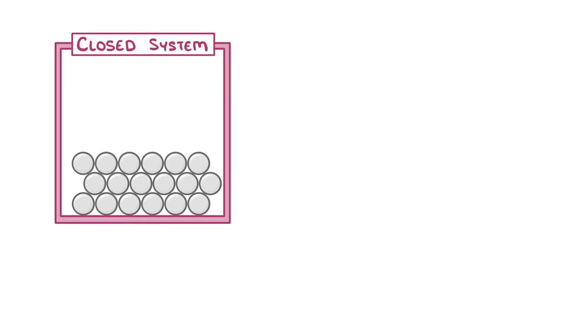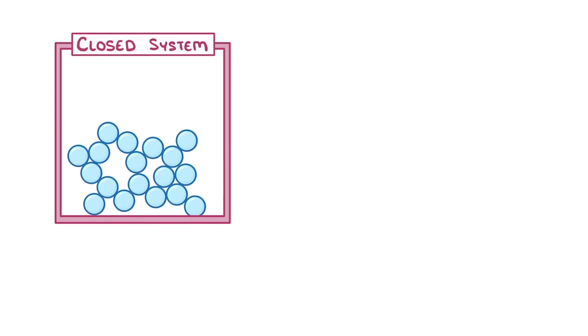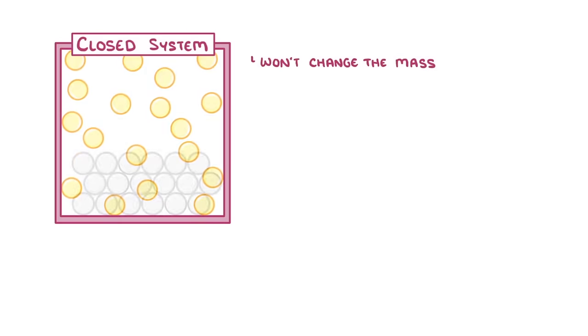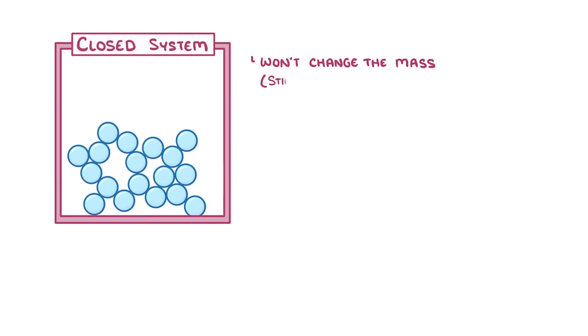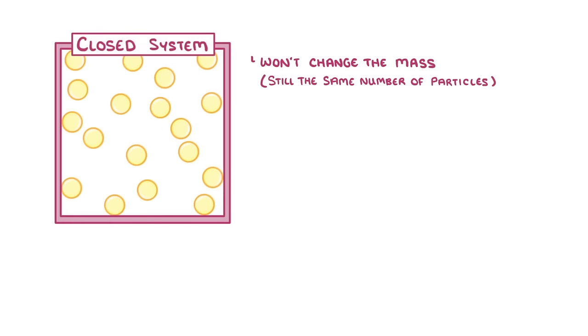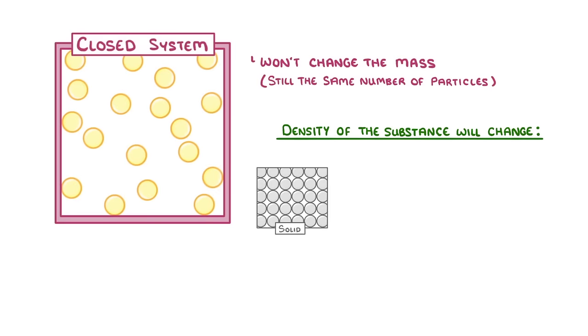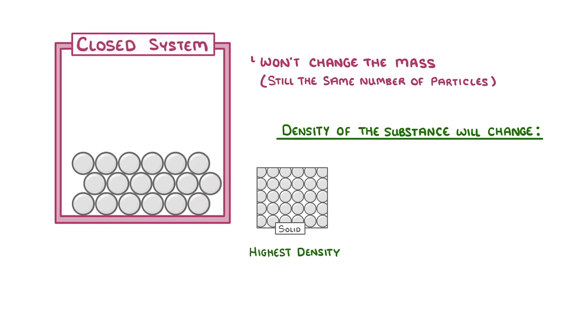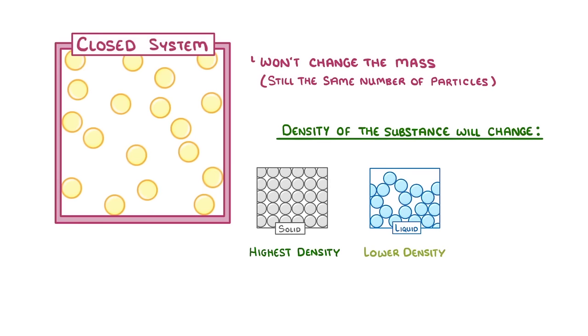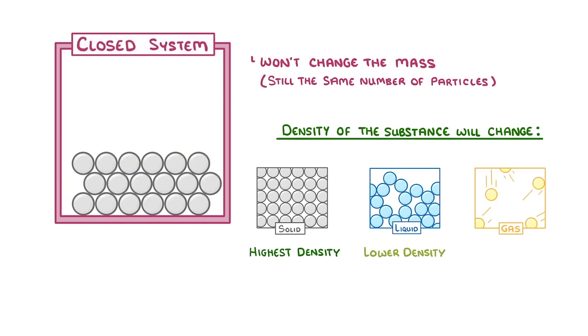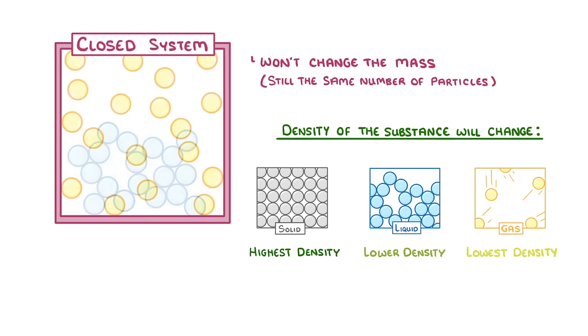The last thing we need to mention is that if we're working within a closed system, changes in state won't change the mass at all as it's still the same number of particles. However, the density of the substance will change, with solids having the highest density, liquids having slightly lower density, and gases having the lowest density of all three.